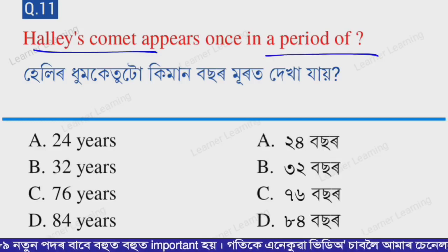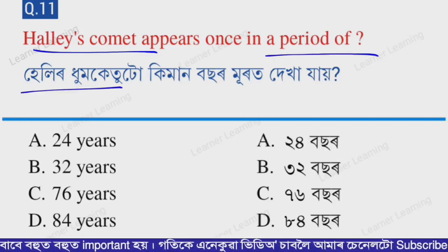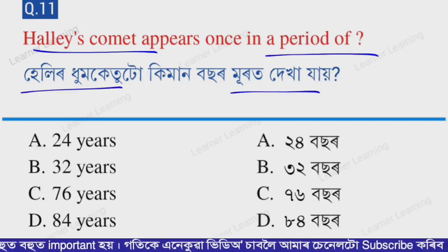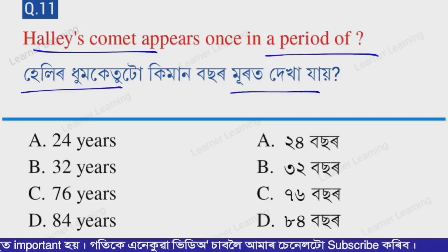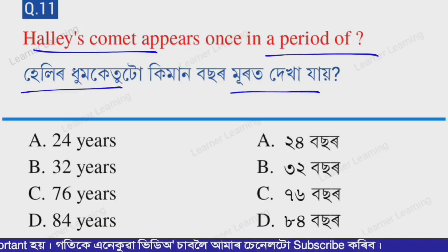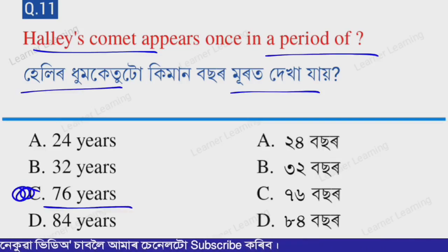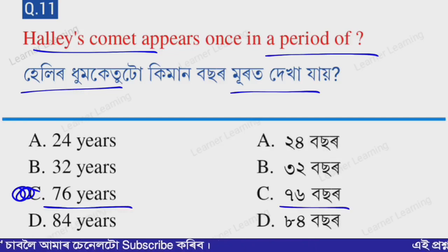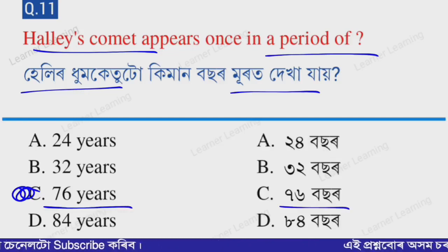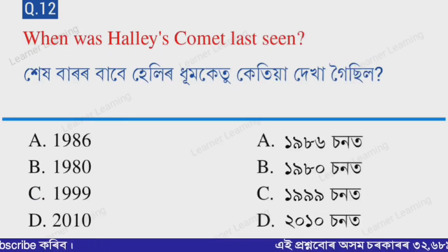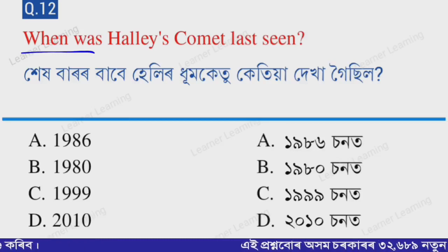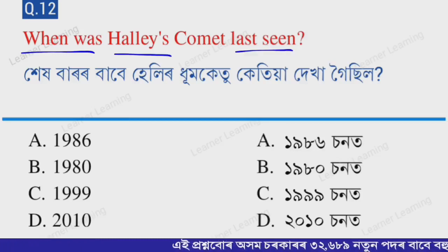Next question: Halley's Comet appears once in a period of how many years? Select from the options. Option C — 76 years. Halley's Comet is seen once every 76 years.